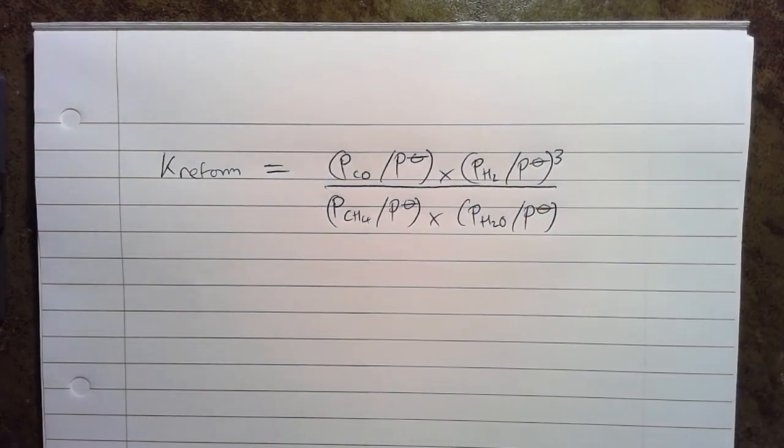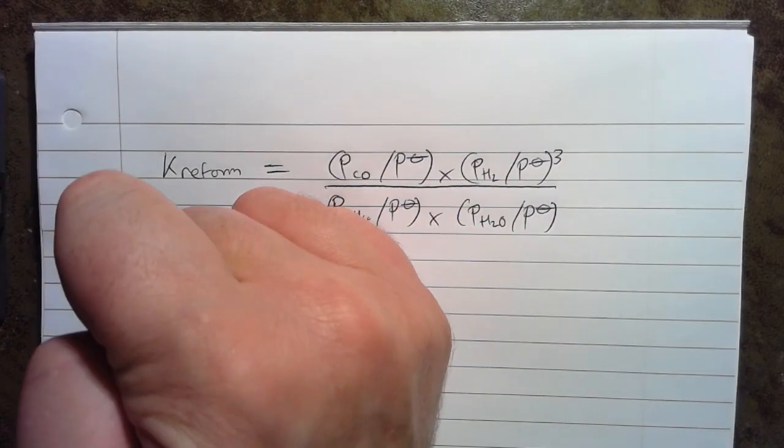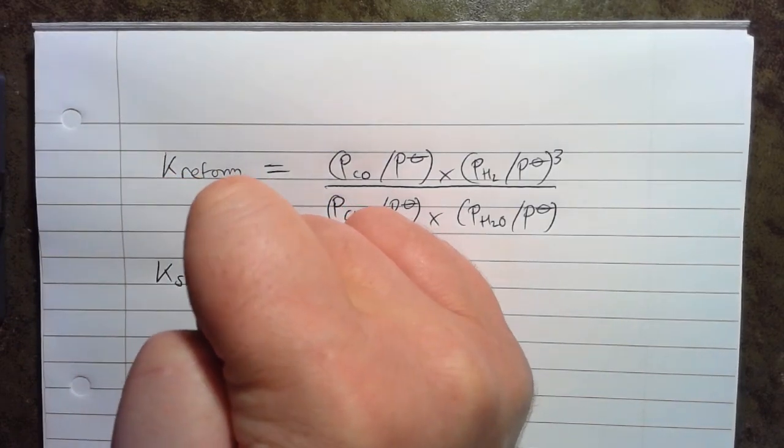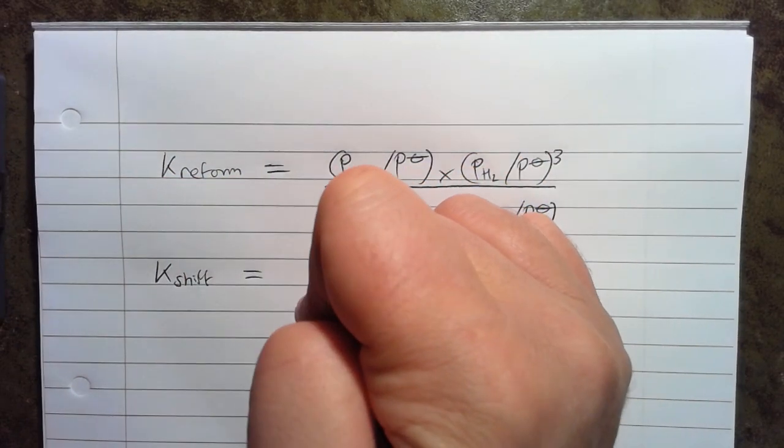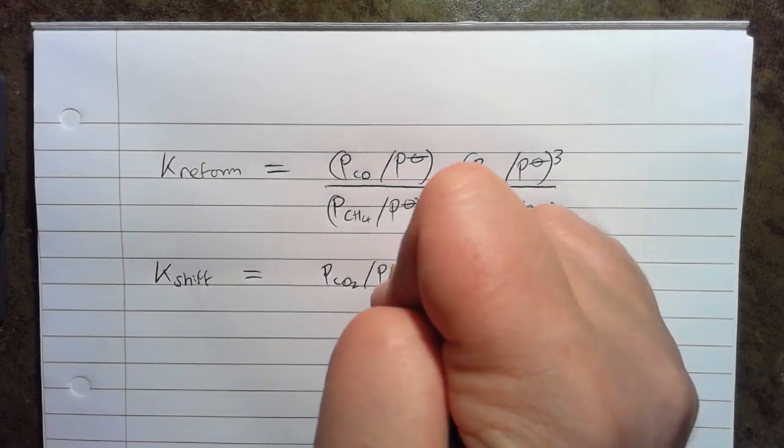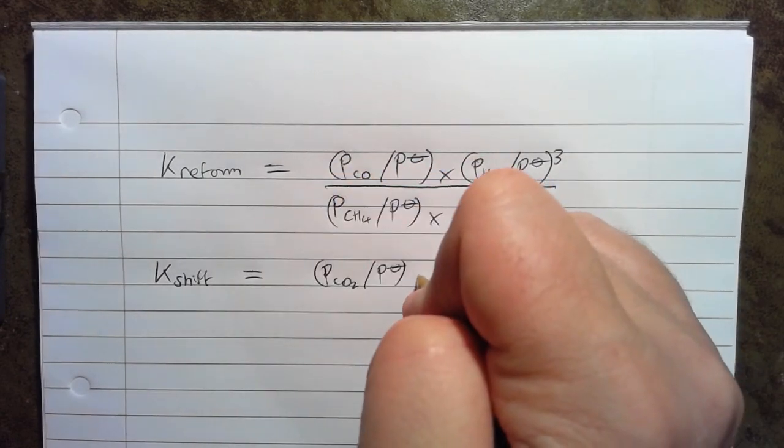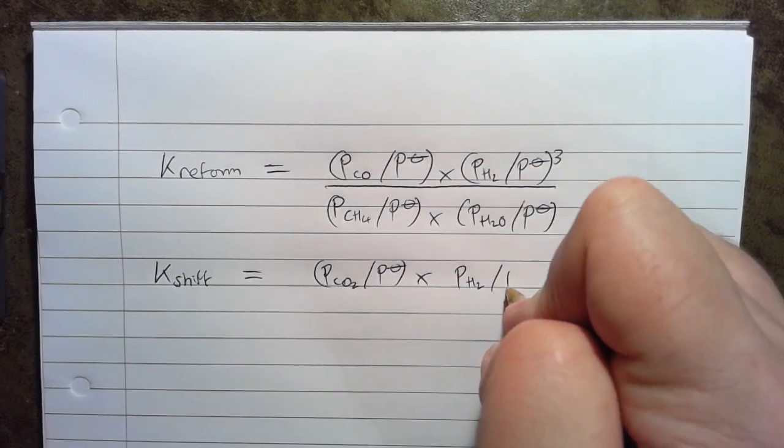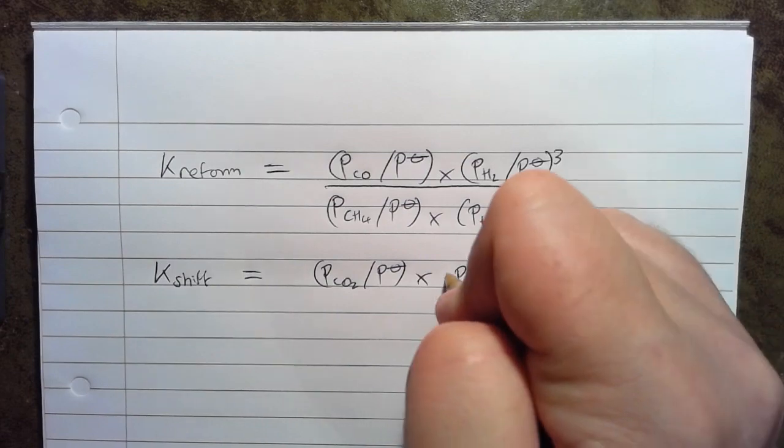Okay so that's one of the equations for the equilibrium constant that we've got. Then we also have a second equilibrium, the shift reaction, and we have K shift equals partial pressure of CO2 divided by the standard pressure and then the partial pressure of H2 divided by the standard pressure.